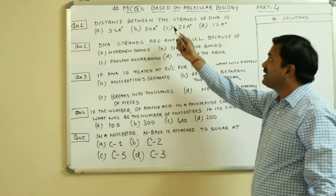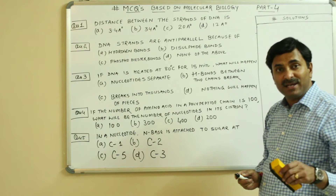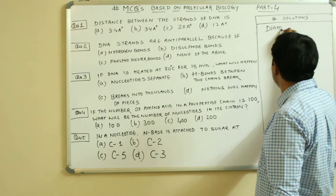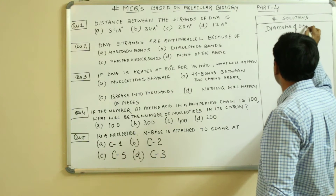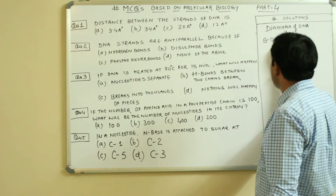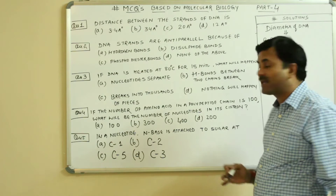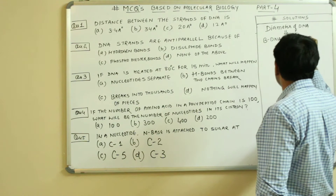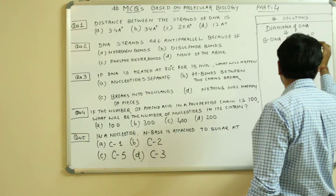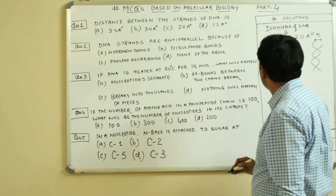The first question is: what is the distance between the strands of the DNA? In other words, what is the diameter of the DNA? If we consider B-DNA, which is the most common type of DNA discovered by Watson and Crick, then the diameter of the DNA is 20 Angstroms.